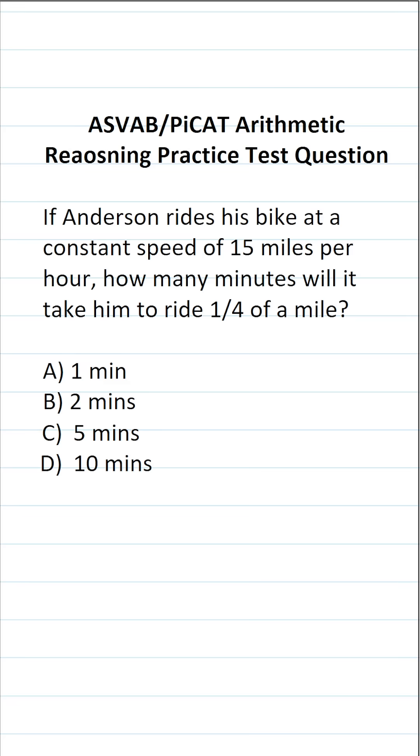This arithmetic reasoning practice test question for the ASVAB and PiCAT says, if Anderson rides his bike at a constant speed of 15 miles per hour, how many minutes will it take him to ride a quarter of a mile?